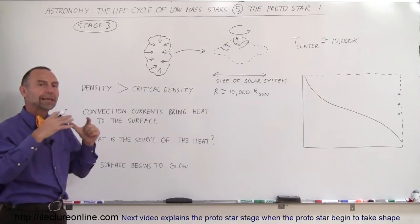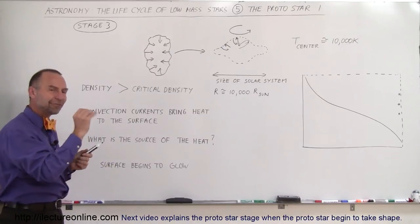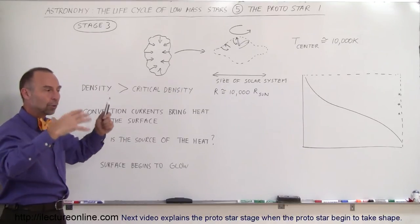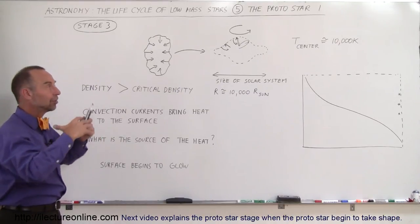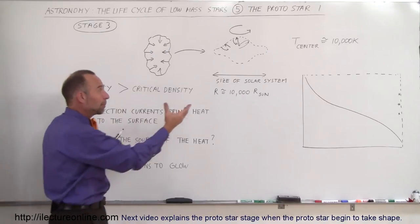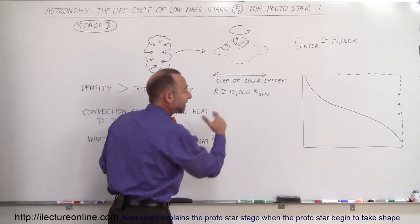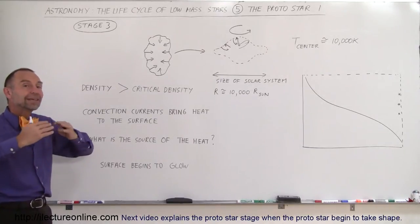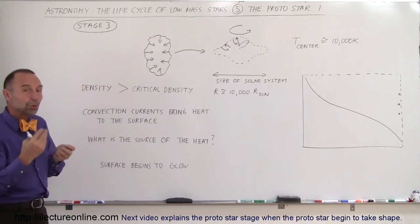The edges of that cloud of dust and gas begin to heat up and glow, first a very faint red, and as temperature continues to climb, the glow becomes more intense. This enormous object, probably about the size of the solar system, about 10,000 times the diameter of the sun today, will begin to give off light.